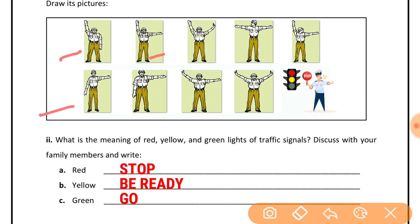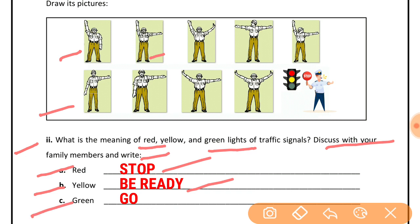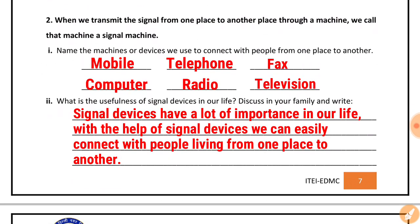Next question: what is the meaning of red, yellow, and green lights of traffic signals? Traffic signals ki lal, pili aur hari lights ka kya matlab hota hai? Discuss with family members and write. First is Red — red means Stop, ruko. Next Yellow — yellow means Be Ready, taiyar raho. Third is Green — green light means Go, jao.